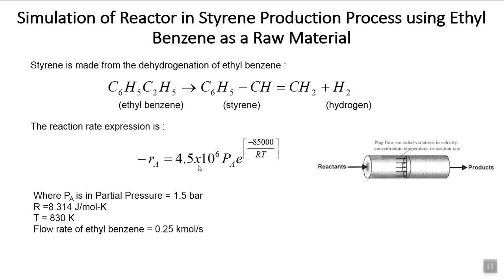The rate of the reaction is given by: minus r equals 4.5 times 10 to the power 6, times PA, times e raised to minus 8500 divided by RT, where PA is the partial pressure which is 1.5 bar, R is the universal gas constant 8.314 joules per mole Kelvin, and temperature is 830 degrees Kelvin.